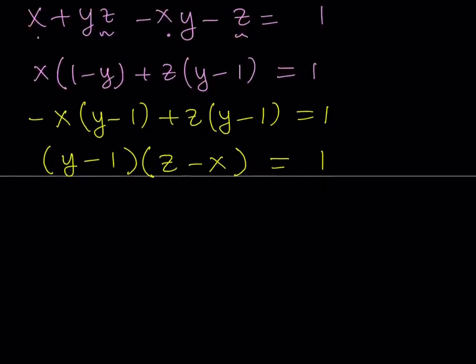This is significant because 1 can only be factored into 1 × 1 and (-1) × (-1). So we're looking at two cases. Case 1: if y - 1 = 1, that also implies z - x = 1. So 1 × 1 = 1, which gives us y = 2.